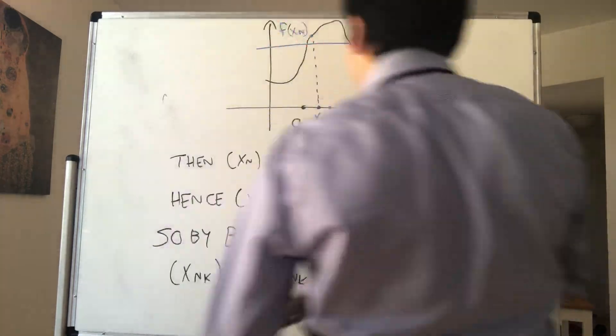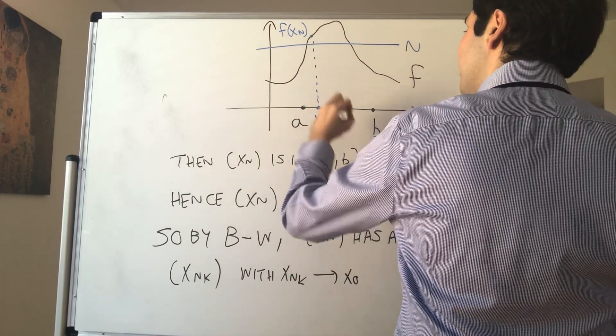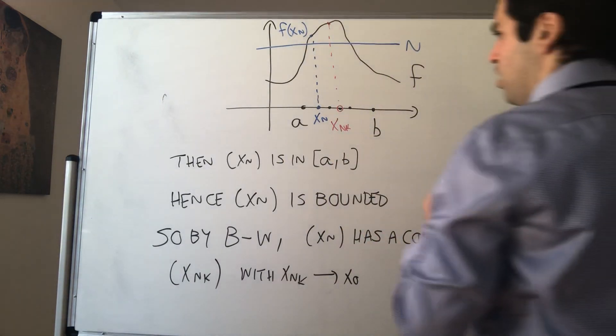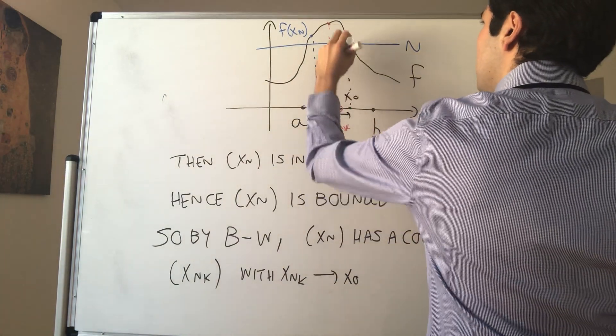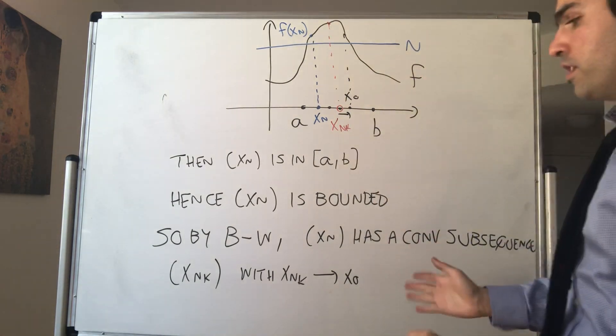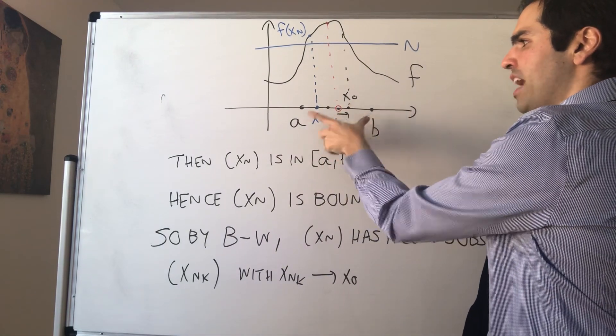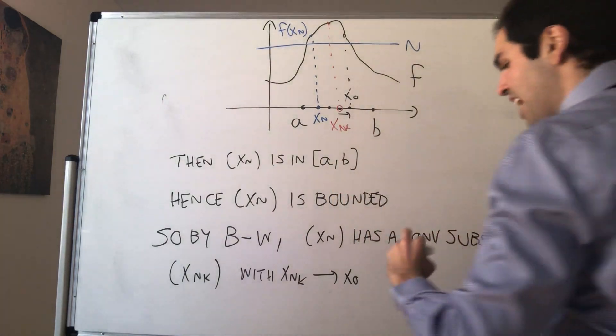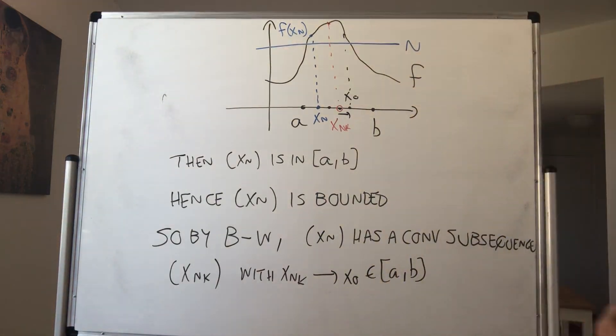So again, we have this sequence xₙ, and from that we can extract a convergent subsequence xₙₖ that converges to some x₀. And very important, here's where we need the fact that we have a closed interval. So xₙₖ converges to x₀. But since the interval [a,b] is closed, we actually get that x₀ is in the interval [a,b].